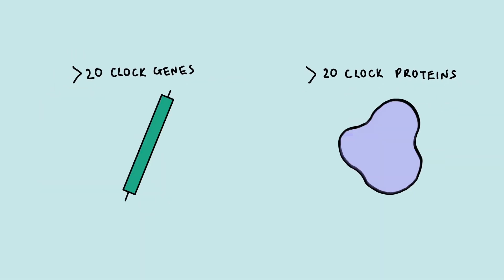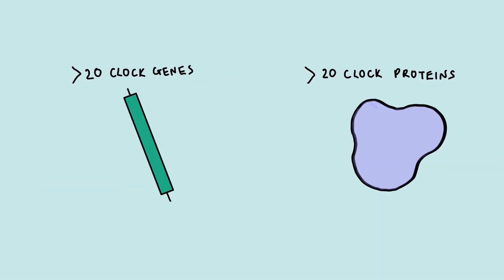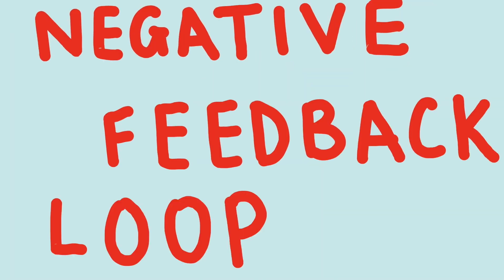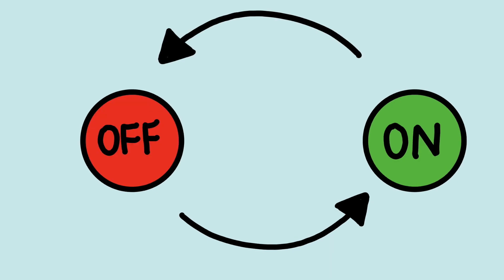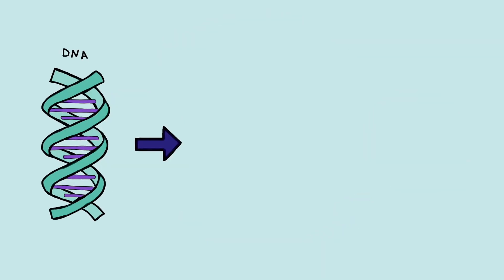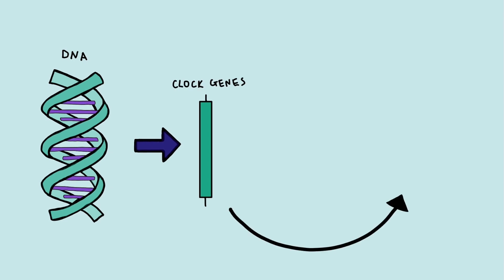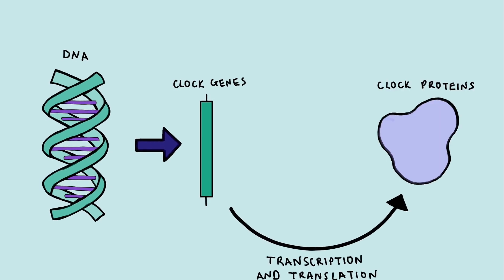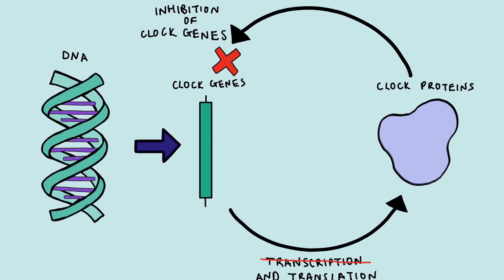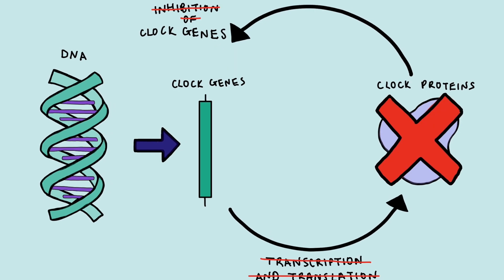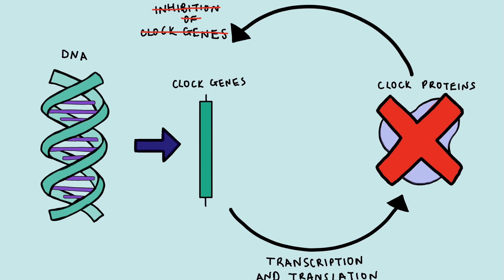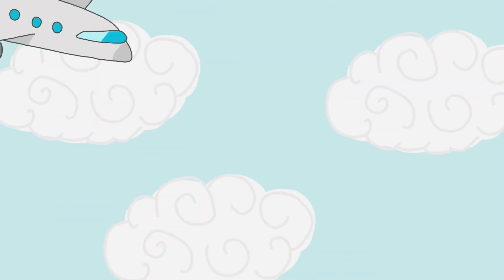This is regulated by over 20 clock genes and the proteins that they code for. This works using a negative feedback loop where an increase in one signal causes a decrease in another. Clock proteins are produced using the clock gene code. These proteins prevent more proteins from being produced by the cell until they have all been degraded. This cycle of protein production and degradation takes around 24 hours.